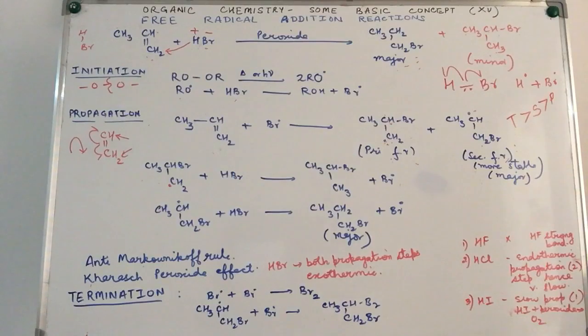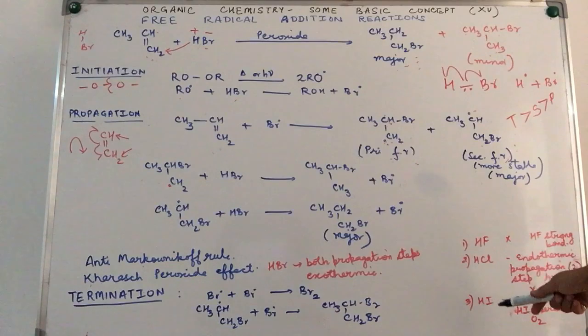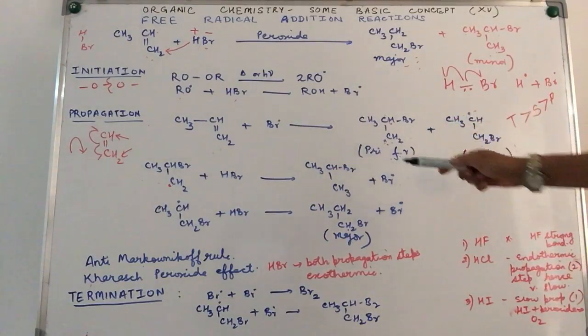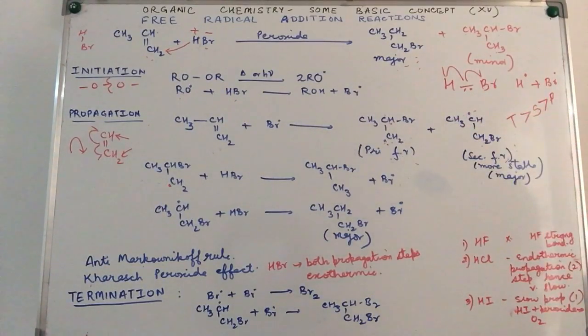What if I replace HBr with any of the other hydrogen halides: HF, HCl, HI? In the case of HF and HCl, the bond between hydrogen and the halogen is very strong. So with HF, the reaction does not happen. It will proceed normally. With HCl, what happens is the second step of the propagation reaction becomes endothermic. So endothermic means it does not result in release of energy, so the reaction actually slows down.